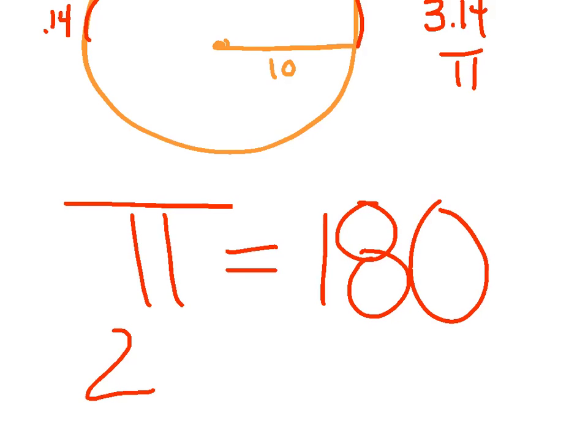And think about this. If I said 2 pi, well, basically, I multiplied this side by 2, and I'll just multiply this side by 2. So 2 pi is equal to 360 degrees.